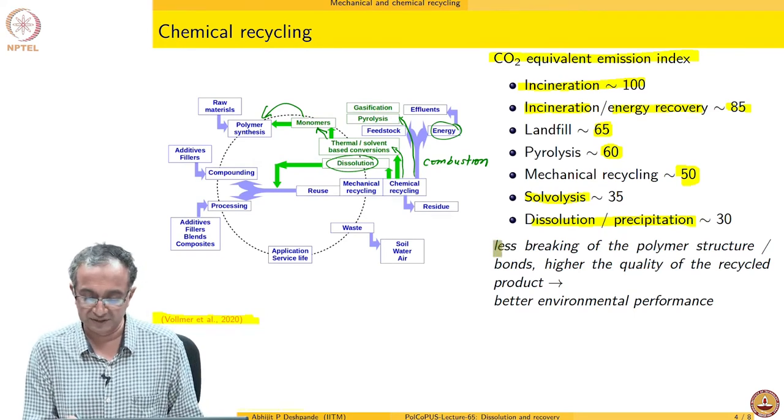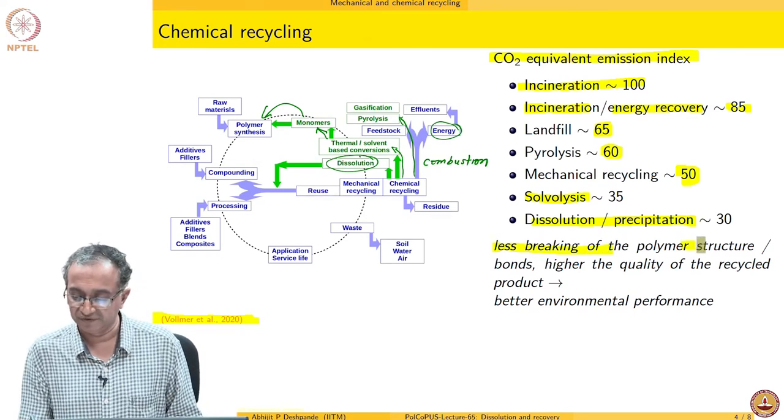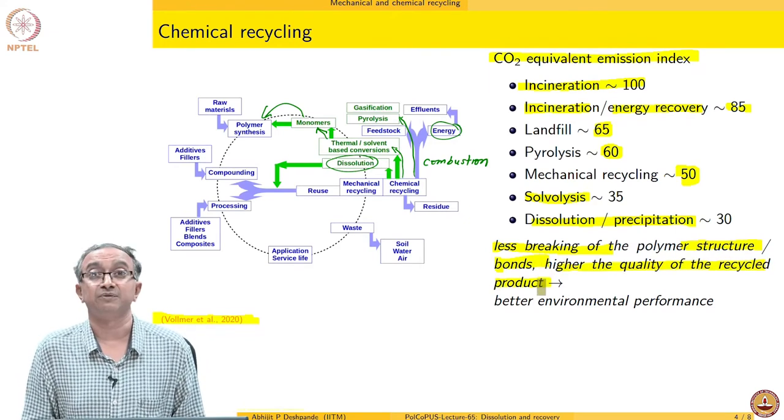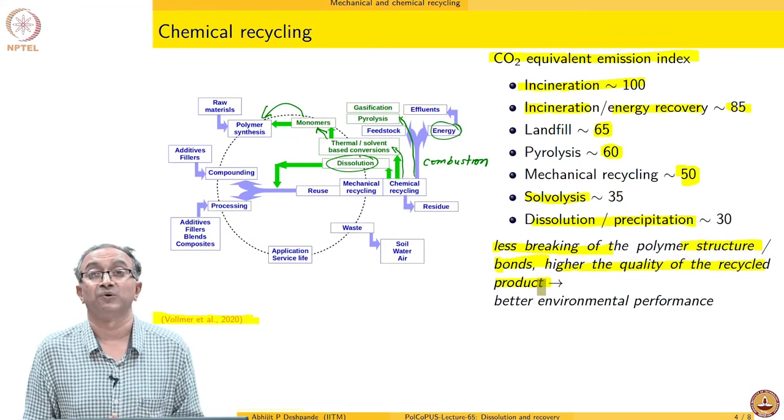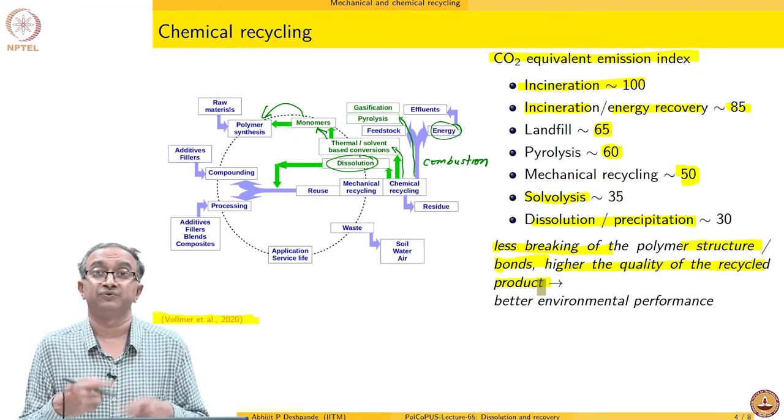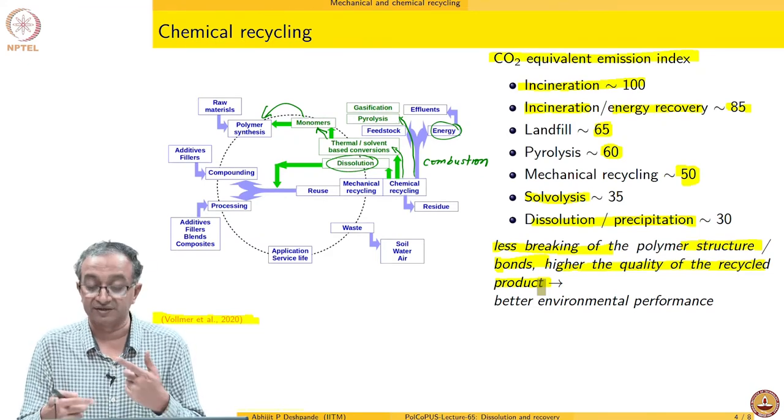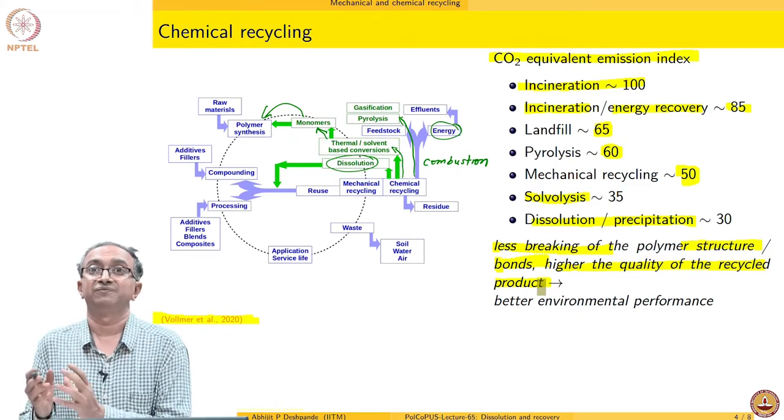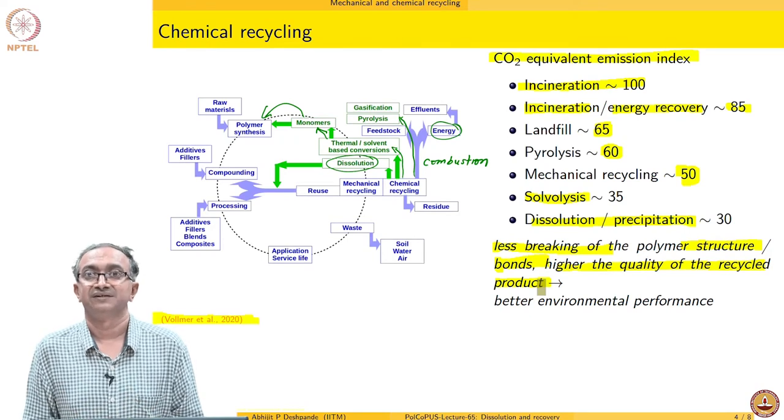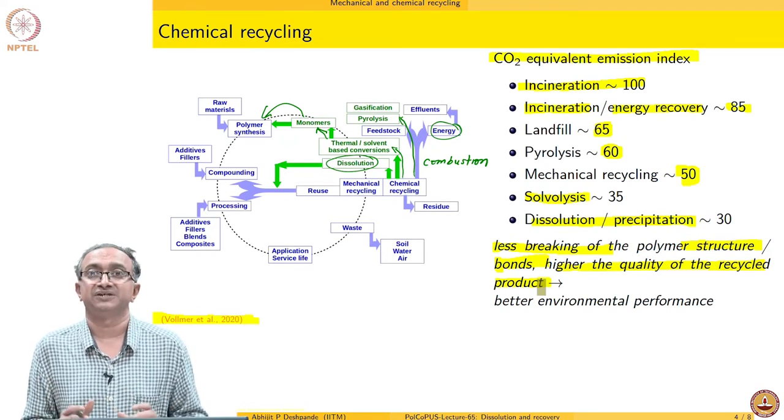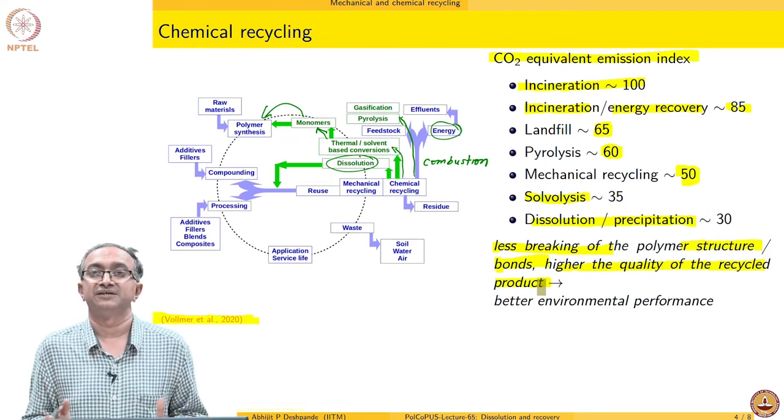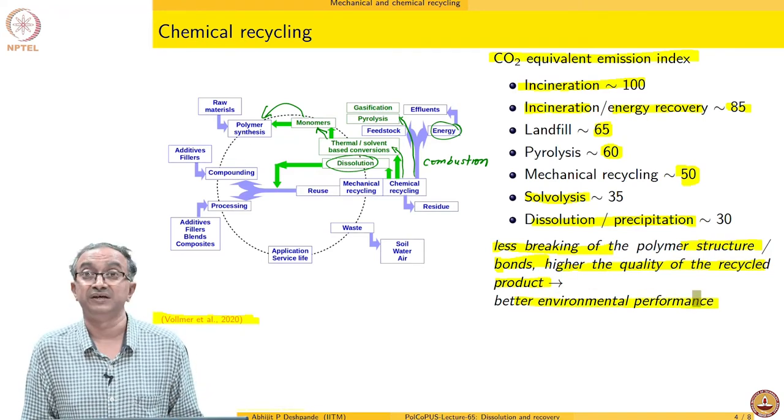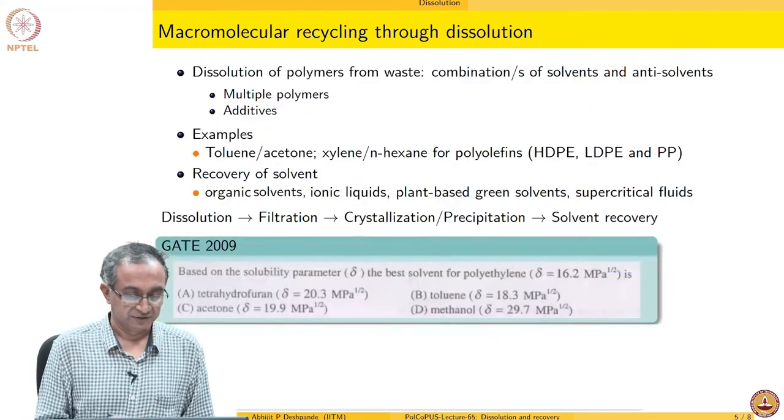But look at at least the estimation from the literature, dissolution and precipitation seems to be the best option. And this is so because there is less breaking of the polymer structure bonds and because of that the recycled product promises to have a higher quality. Because whenever we are doing mechanical recycling or any other reactive processing, the control on what exactly do we get at the end is a little bit less. In the dissolution precipitation, we are getting basically the same polymer that was used earlier. Therefore, it leads to possibly a better environmental performance.